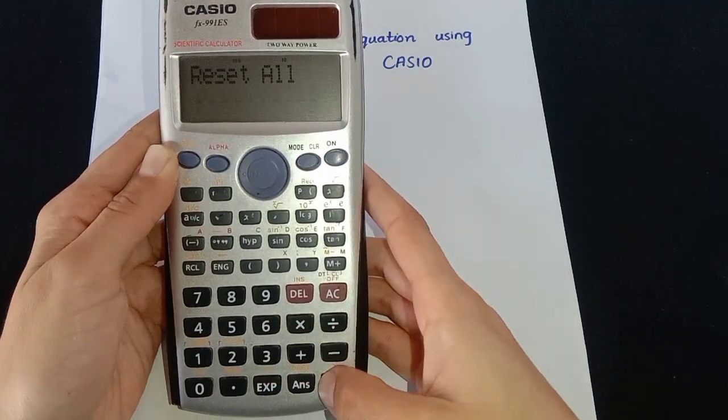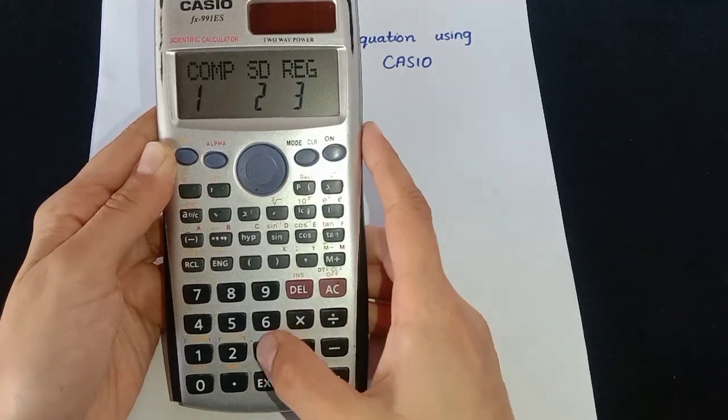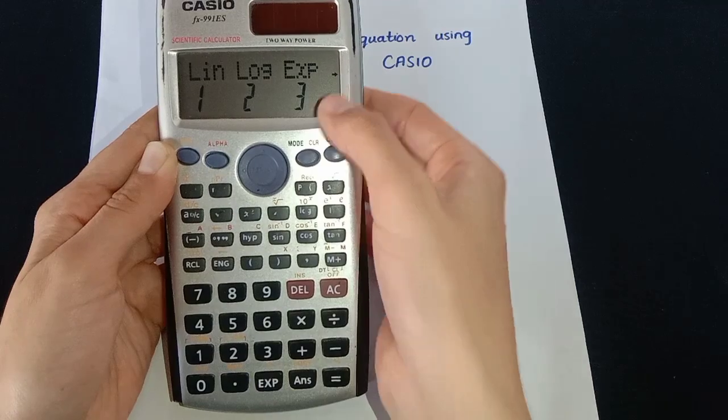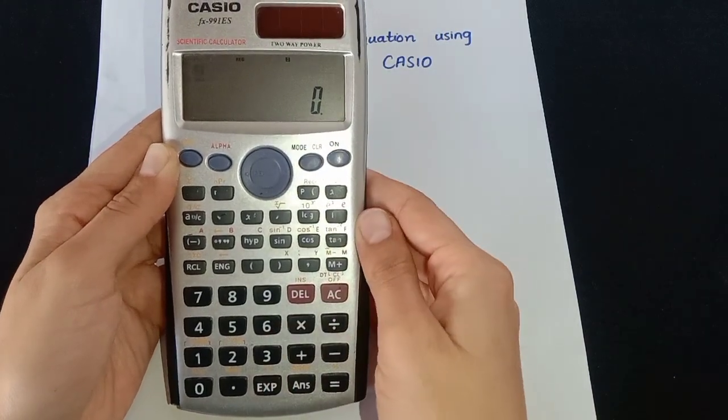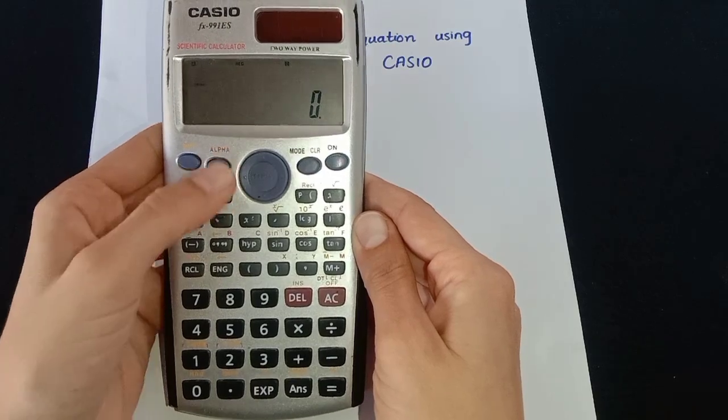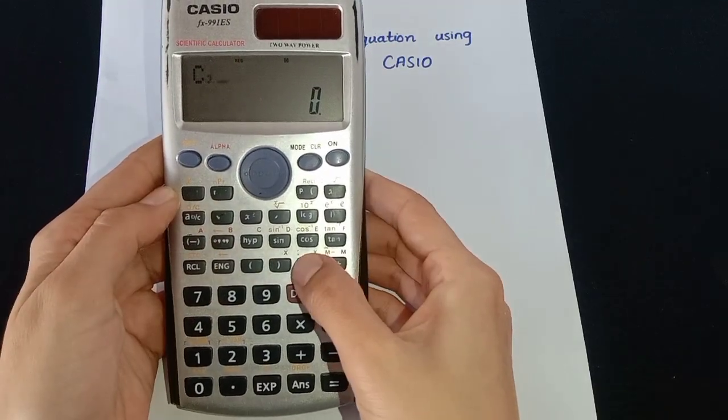reset the calculator and erase all the previous data. Then press mode and press 3 for regression, then press the right arrow key and select 3 for quadratic equation. Now press alpha key and then hyperbolic key, then press comma.